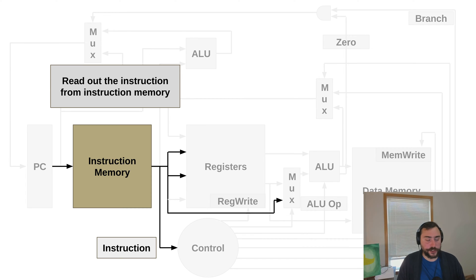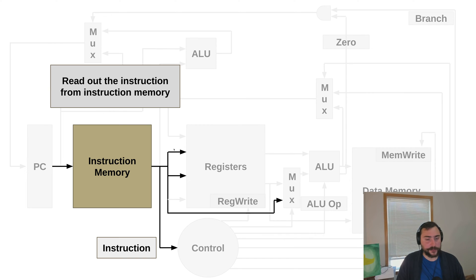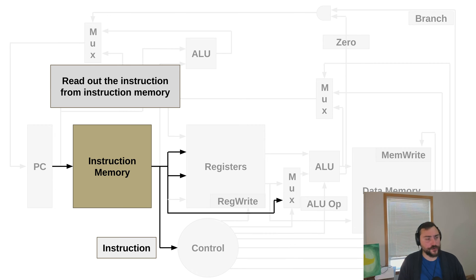We read the instruction out of memory, and that's going to start setting some signals. It's going to say which registers we're going to access as part of the data that we're going to store — that's going to be one of the operands — and one of the registers that's going to be part of our address calculation for our store. We'll also have an immediate value in our instruction as part of the address calculation. And our instruction will also come down to our control, because our control signals — how we say what our architecture is going to do — are based on the instruction that we're executing.